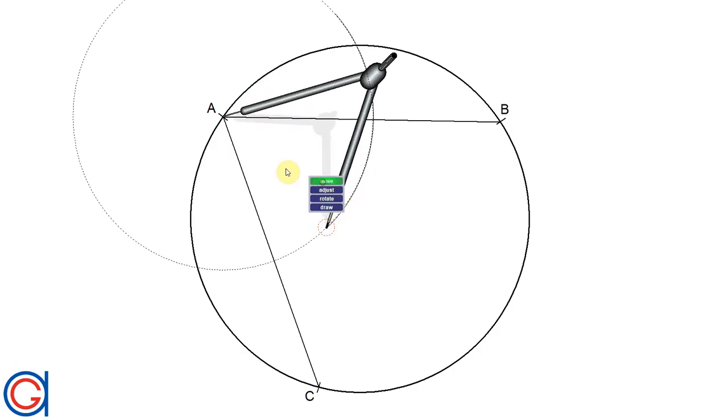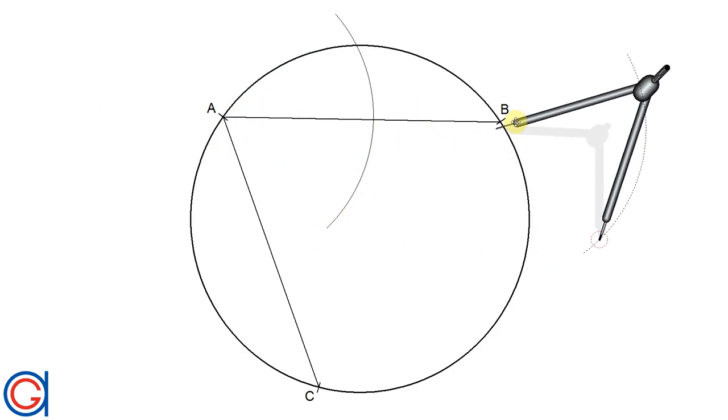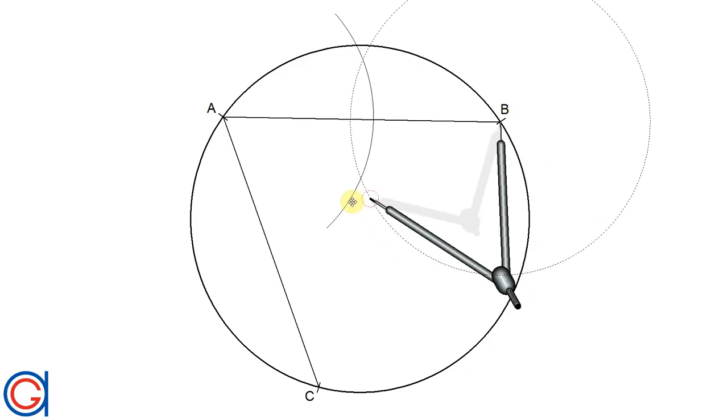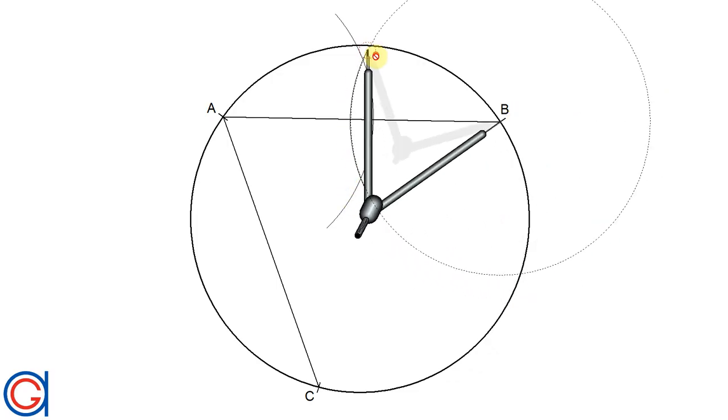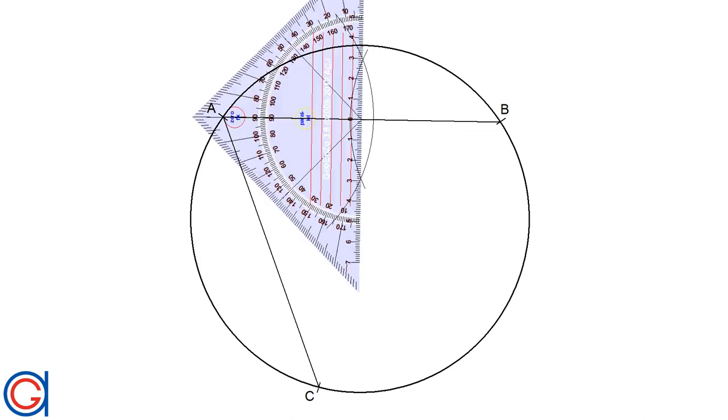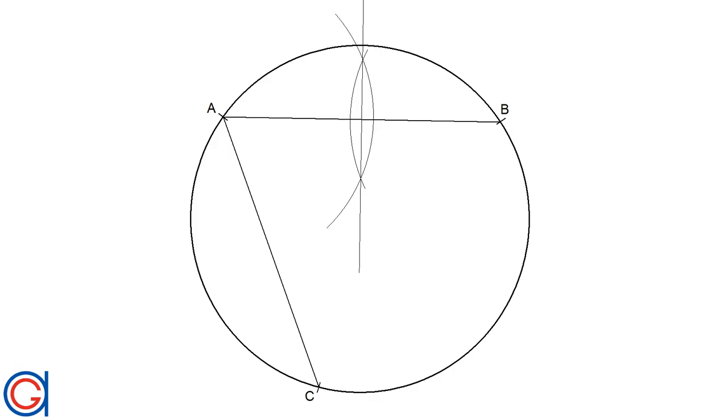And now with the same radius and setting our compass on point B, we are going to describe another arc above and below the line intersecting our previously drawn arc. And now we will draw the perpendicular bisector through the two intersections.